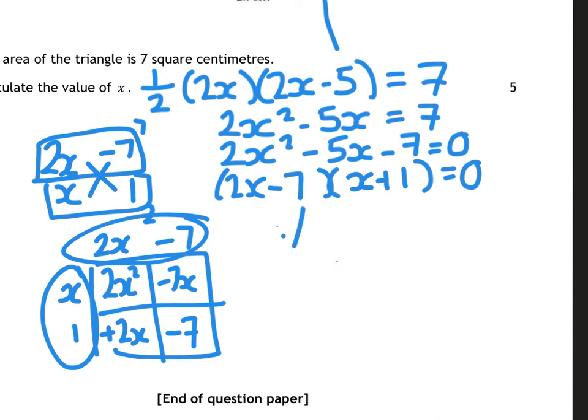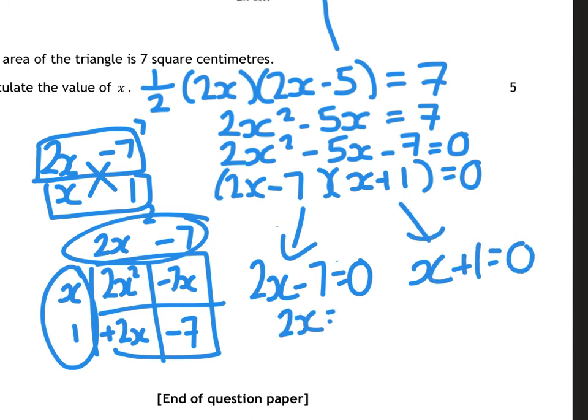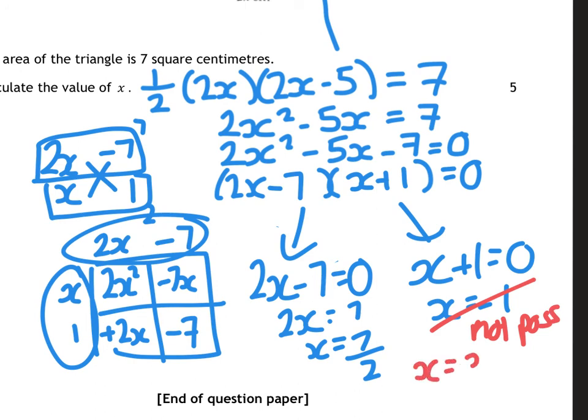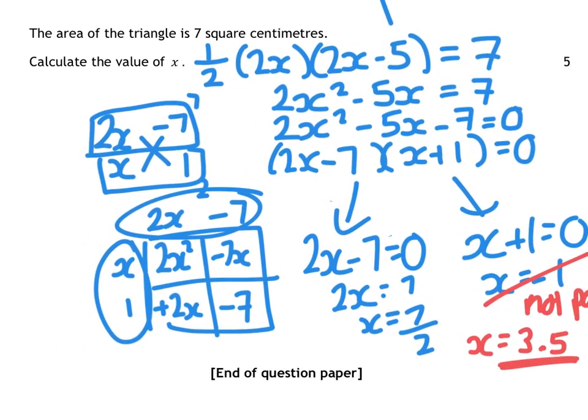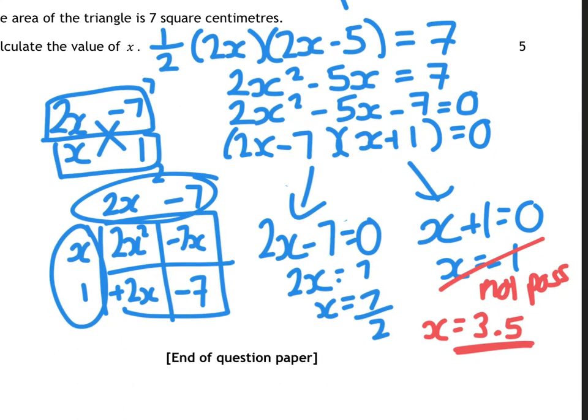From there, you then split these up. 2x minus 7 equals 0 and x plus 1 equals 0. So that gives you 2x is 7 and x is 7 over 2. And that gives you x equals minus 1. Remember, x was to do with a size in a triangle. So that's not possible. So you just always write not possible there. So the final answer is x equals 3.5. And that's what they ask. They ask for the value of x. Sometimes they might then say what is the base of the triangle, but they don't. The final answer is 3.5. Thanks very much.